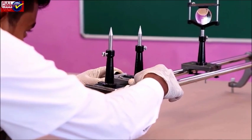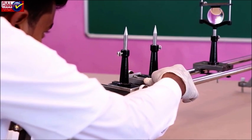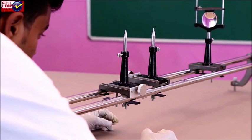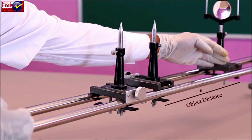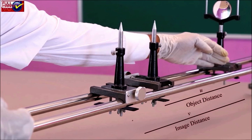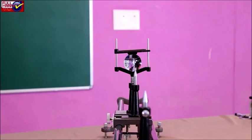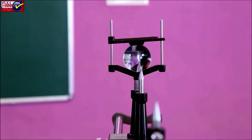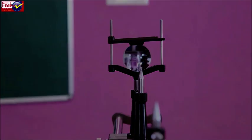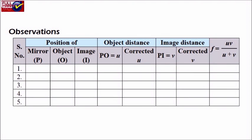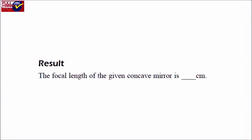Determining the distance of images and object: After removing the parallax, measure the distance of object and image. Measure the distance between the pole of the mirror and the tip of the object needle to find the object distance. Similarly, measure the distance between the pole of the mirror and the tip of the image needle to find the image distance. Result: The focal length of the given concave mirror is determined.